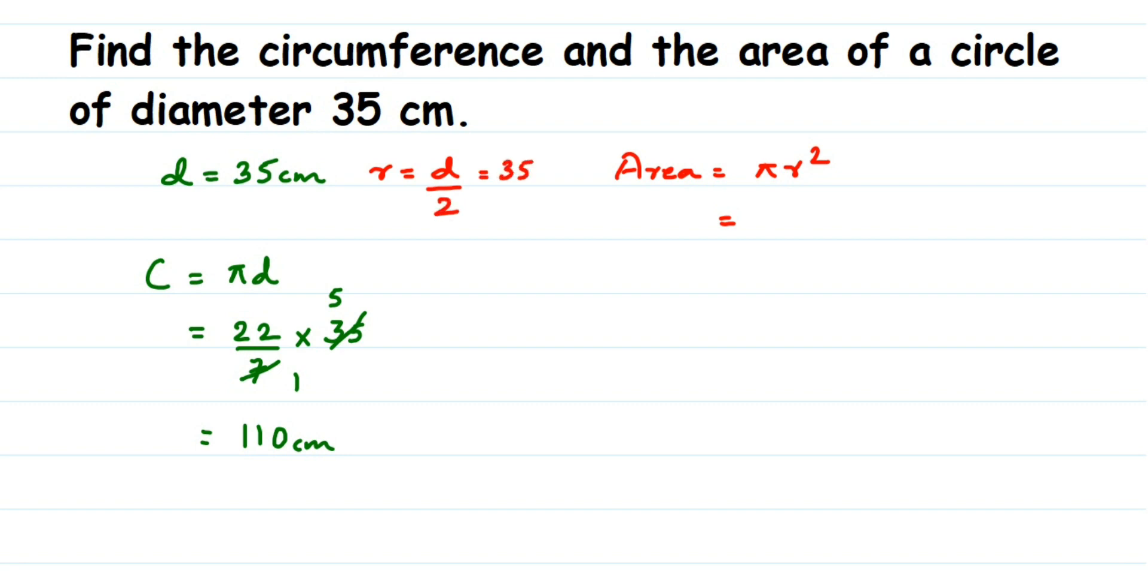We're going to substitute the value. So pi value I want to take it as 22/7 because we can cancel the numbers, and the radius is 35/2. So (35/2)² - square means you're multiplying it 2 times, 35/2.